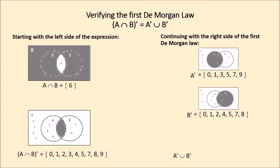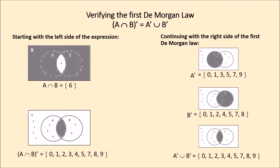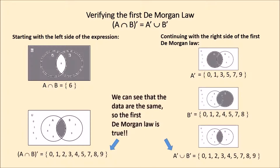Complement of subset A union the complement of subset B: the Venn diagram shows the numbers that are in the complement of A and in the complement of B. The numbers that can be read are 0, 1, 2, 3, 4, 5, 7, 8, 9. We can see that the data are the same, so the first De Morgan law is true.